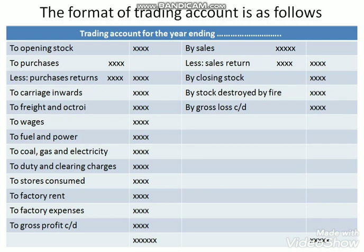Wages are those directly connected with or engaged in the production or manufacturing of goods. If workers are engaged in manufacturing goods, their wages are direct expenses and are entered in the trading account. However, if wages are paid for the construction of a building, they are not entered in the trading account but are added to that particular asset. Wages appear on the debit side of the trial balance.